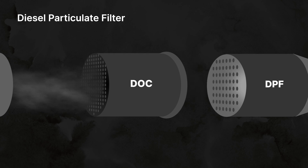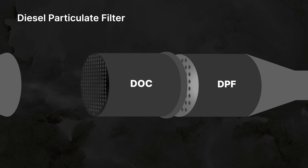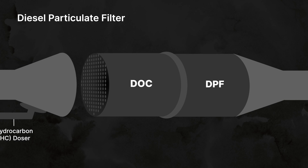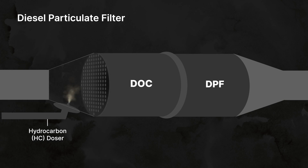The DPF system consists of the seventh injector, also called the hydrocarbon dozer, and a diesel oxidation catalyst. When the DPF is full, the system activates the HC dozer, which is your seventh injector. This sprays diesel into your exhaust stream, which reacts with the DOC filter to generate heat. This heat burns soot into ash until the filter is completely cleaned.